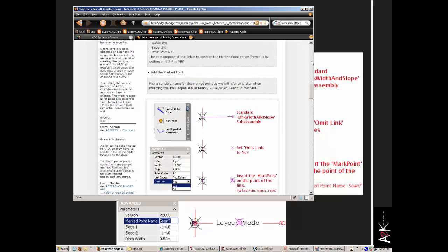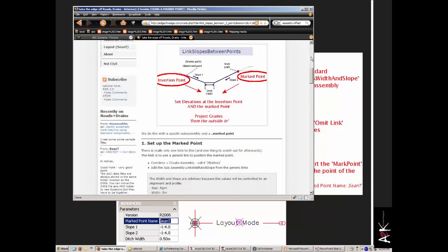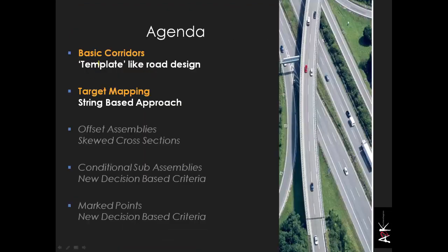Before this session started I posted on the AAC forums that this blog article would be featured, so if you want to find it quickly you can find it there. To summarise: offset assemblies, conditional sub-assemblies, and marked points are advanced features. Most bread-and-butter work happens through basic corridors and target mapping — a combination of templates and strings — where you get the best of both worlds: the flexibility of strings and the quantity-extraction capability of templates.